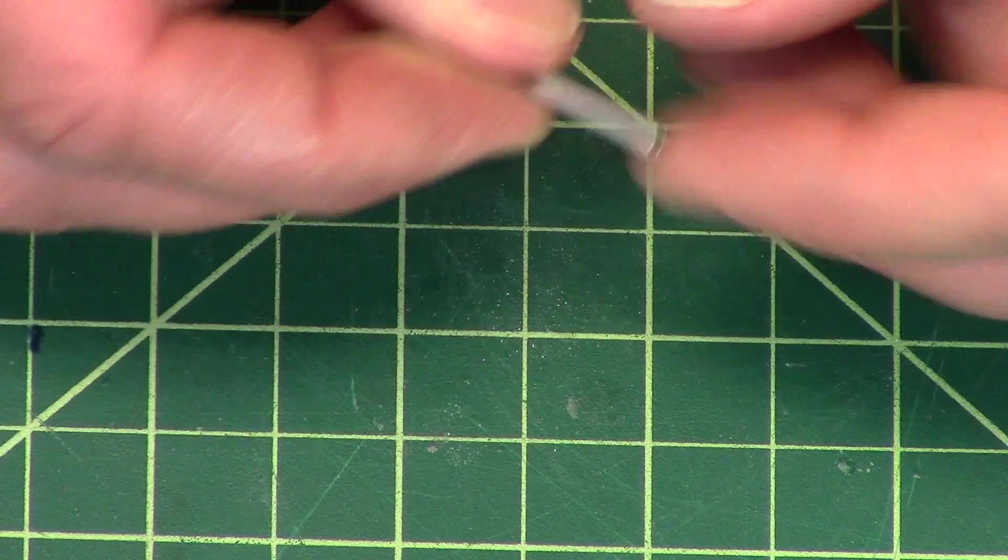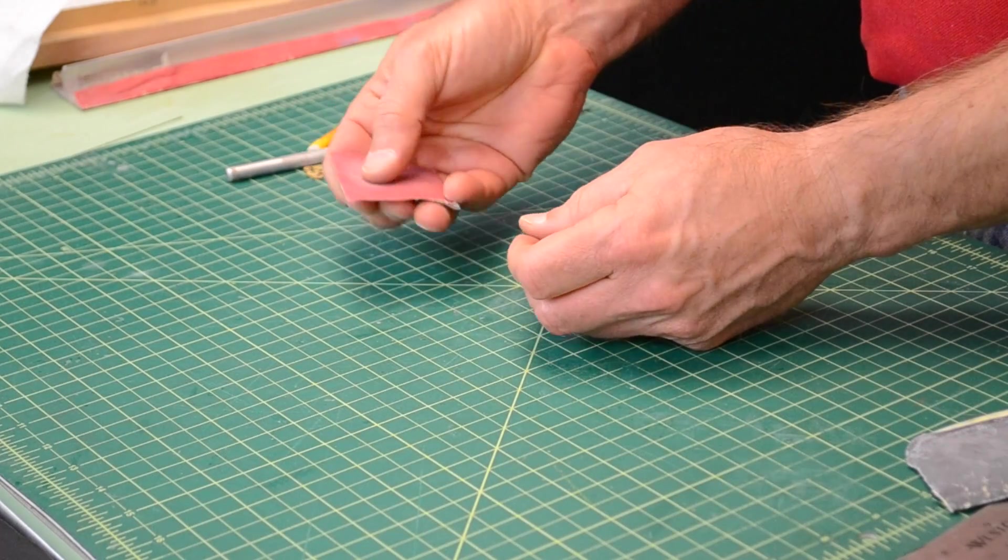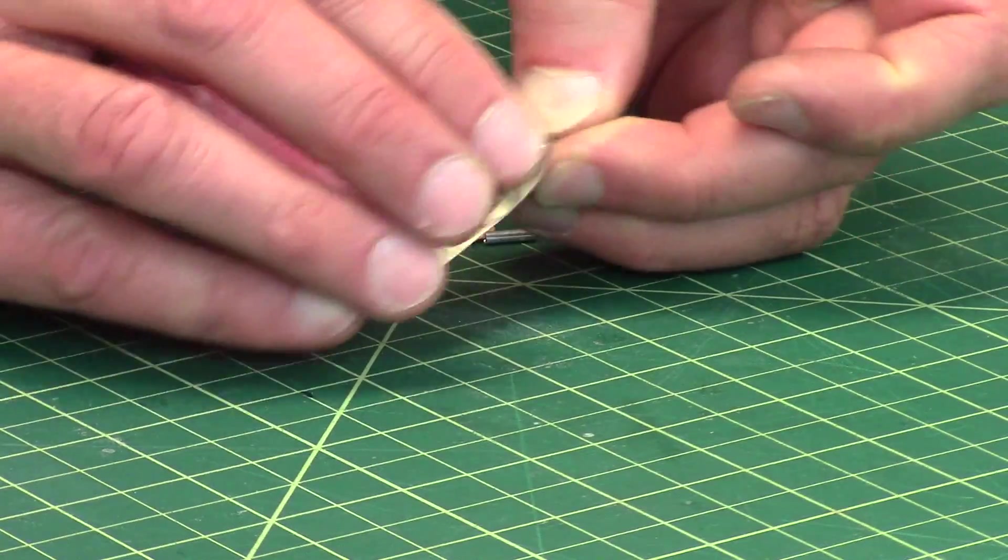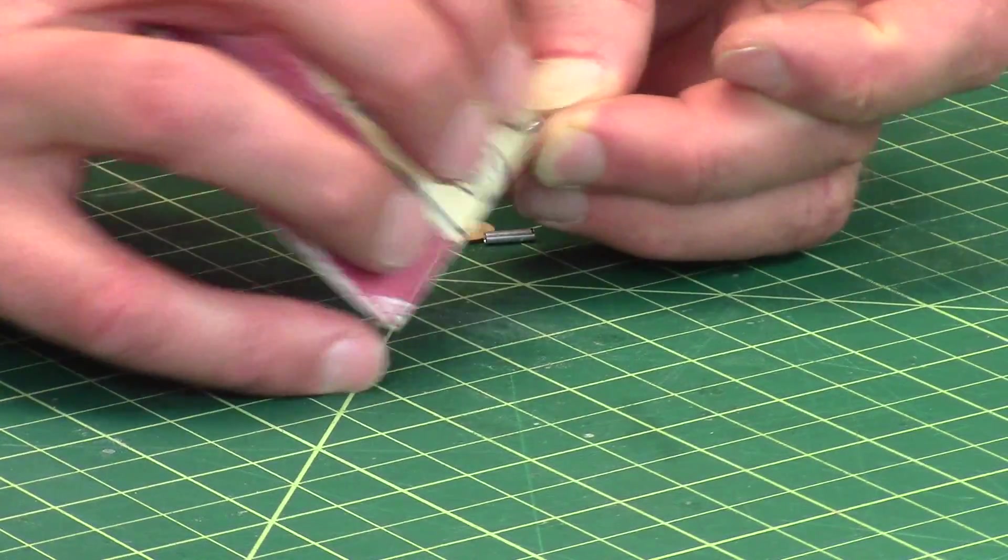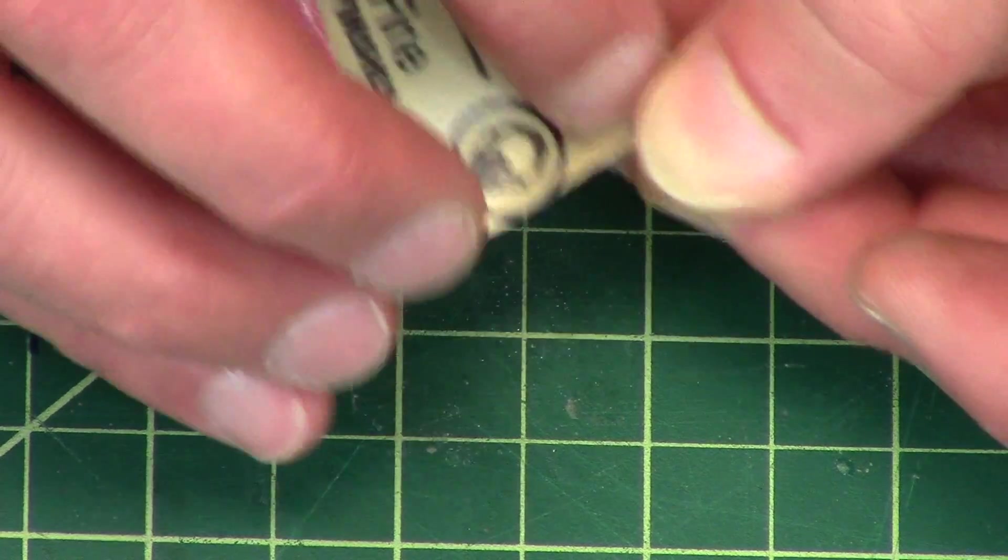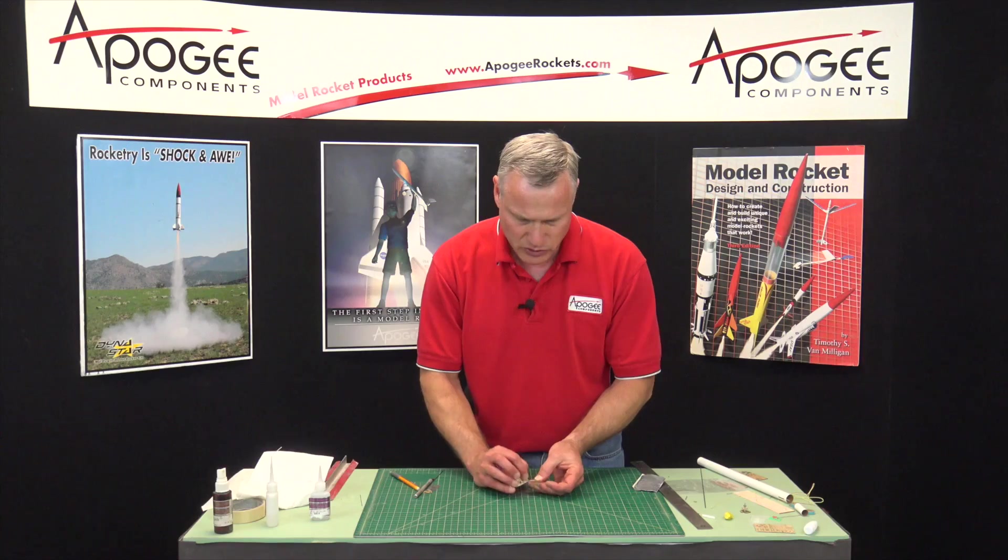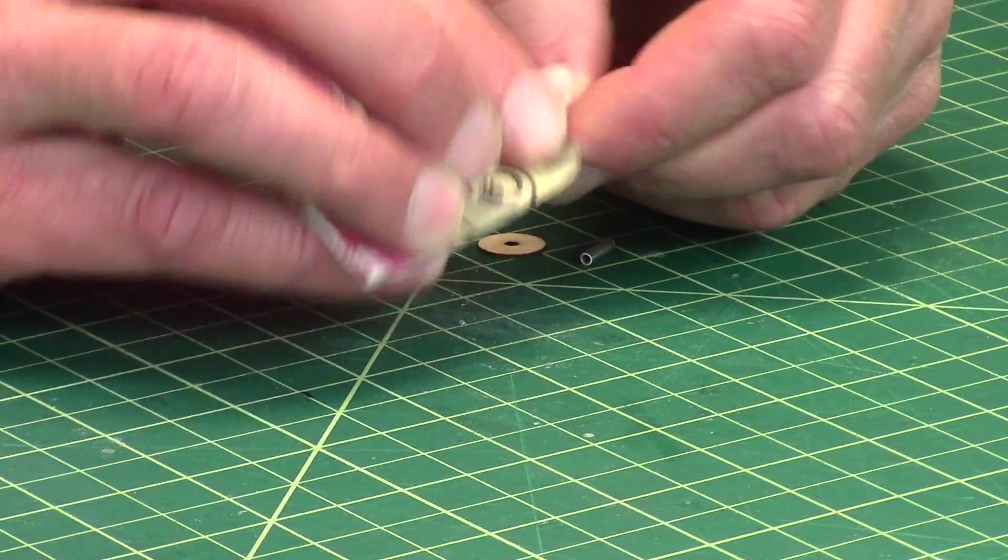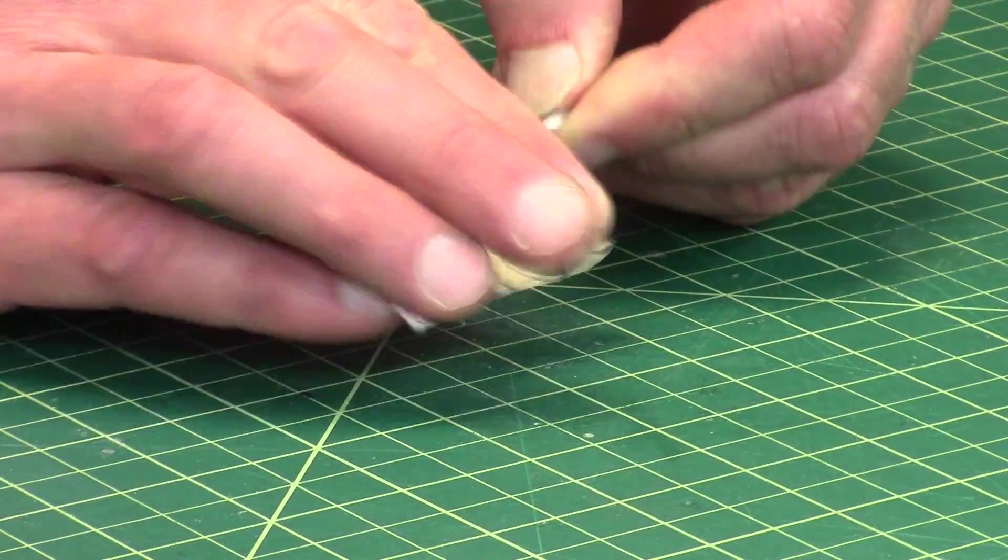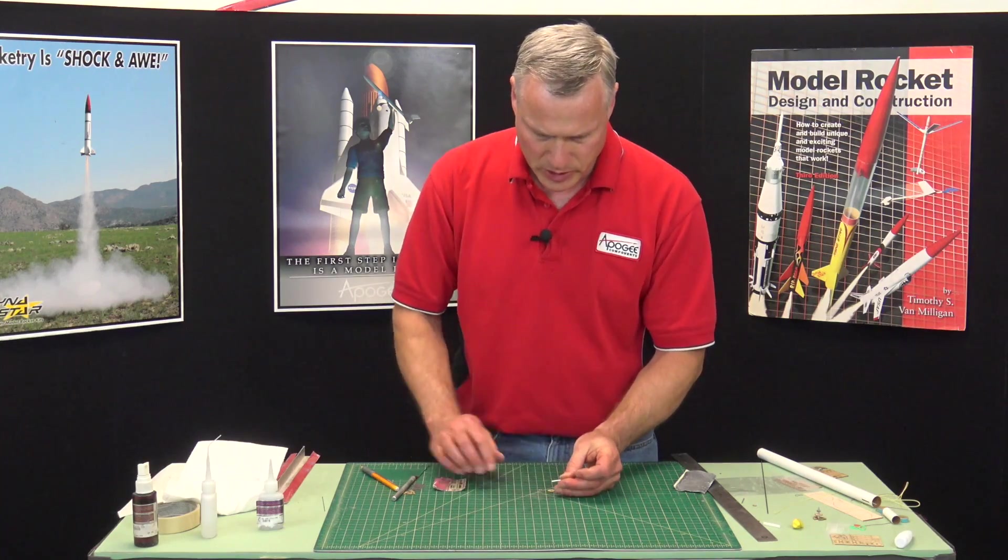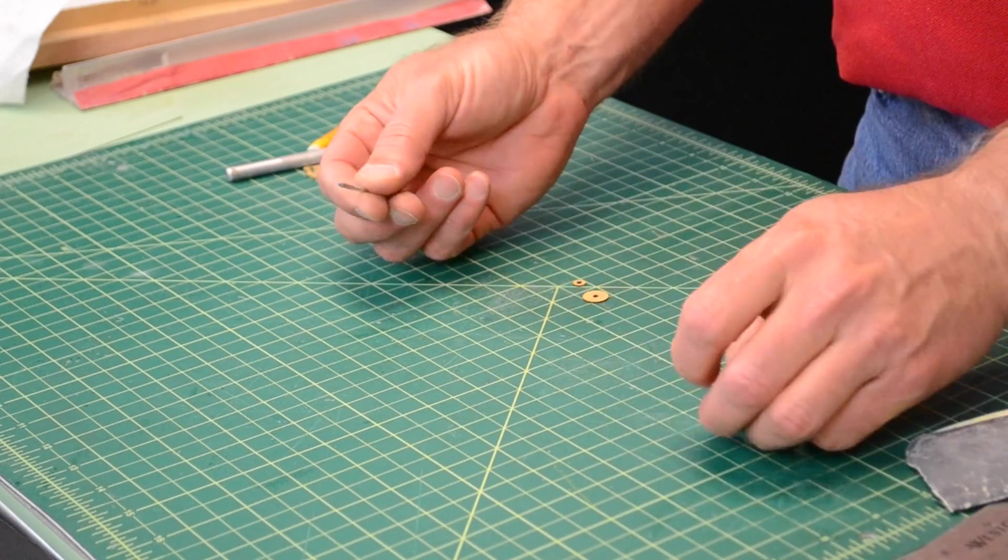Now the long piece, I want to take a piece of sandpaper and scuff up the middle part because we're going to glue onto this. The glue, because the tube is so shiny and smooth, has a hard time sticking to it. So I'm scuffing it up because we're going to glue these pieces on it here in a minute. Just the long piece.